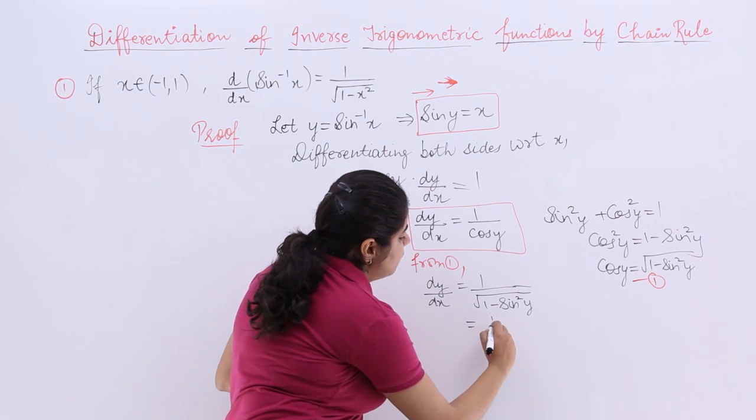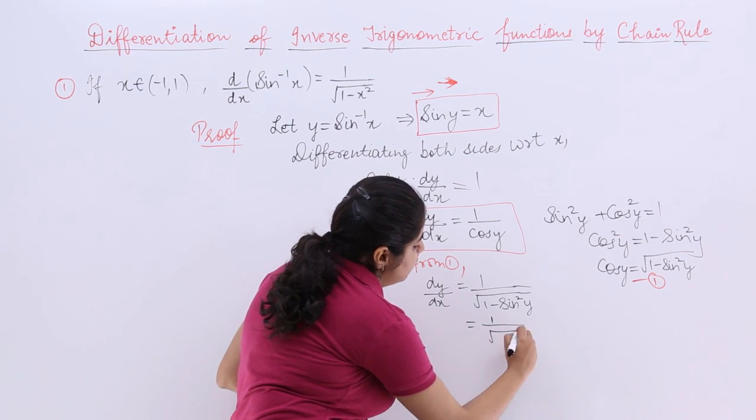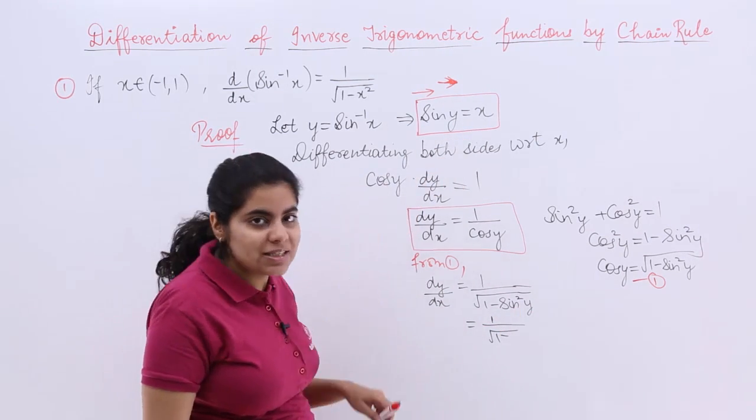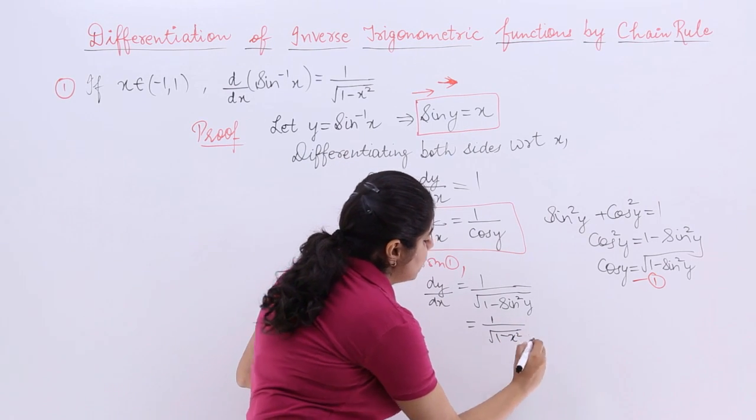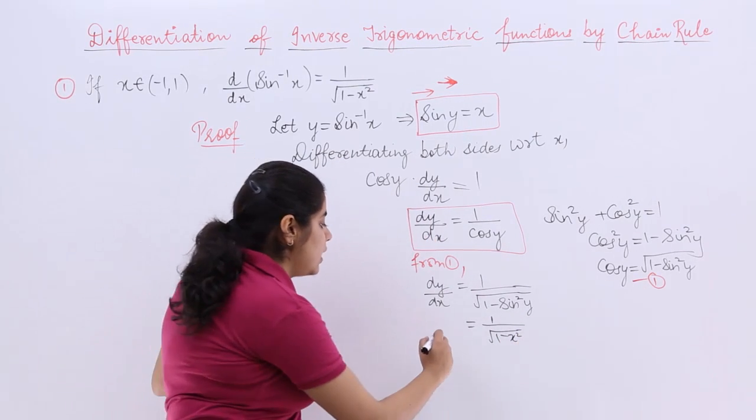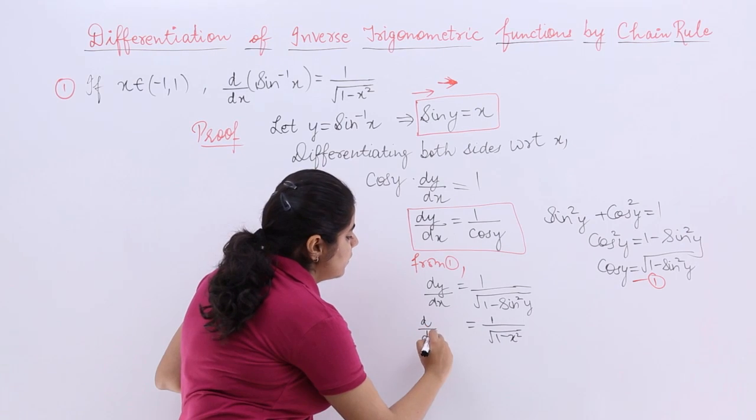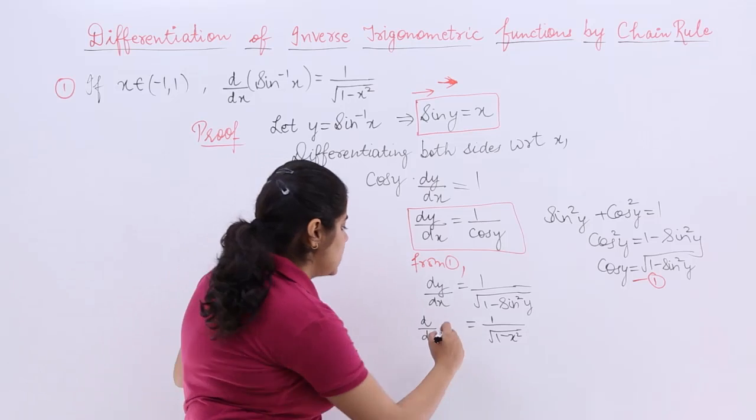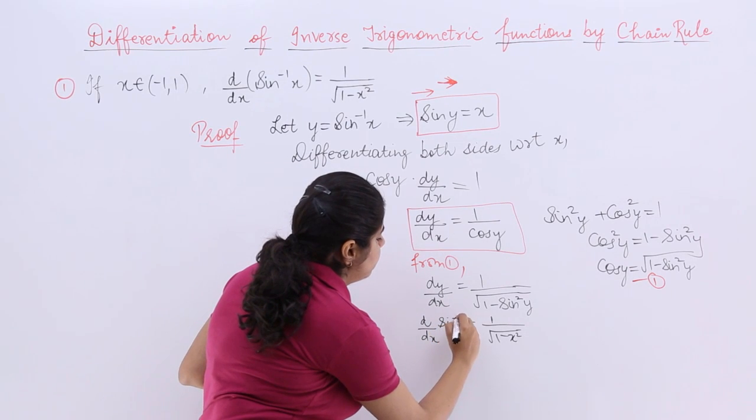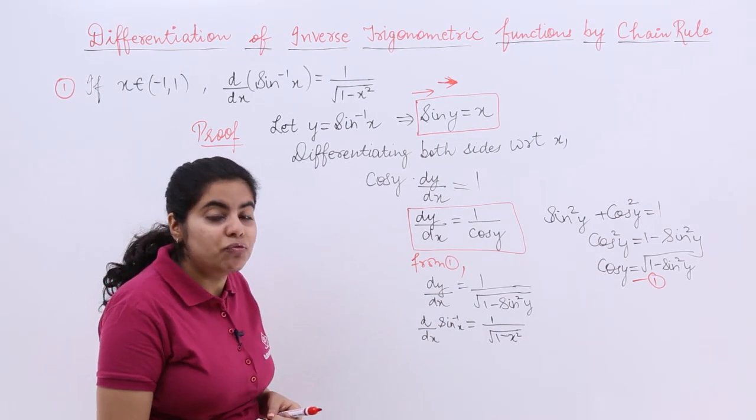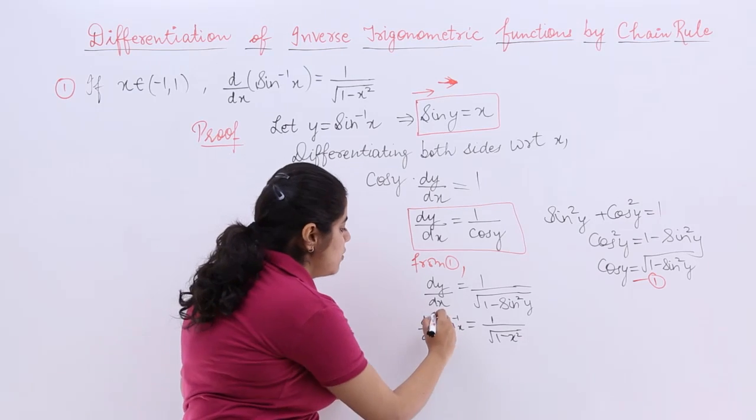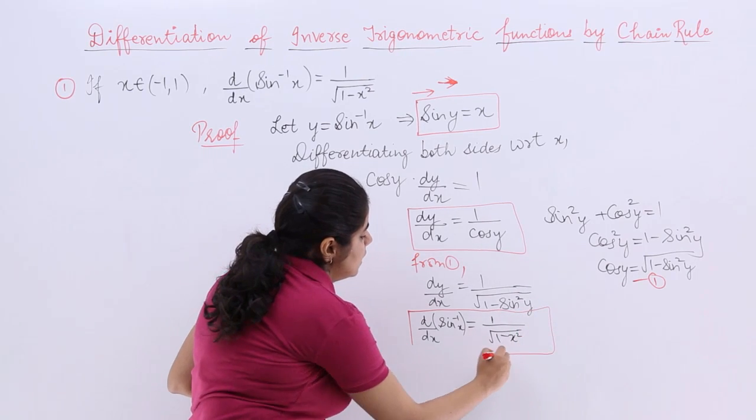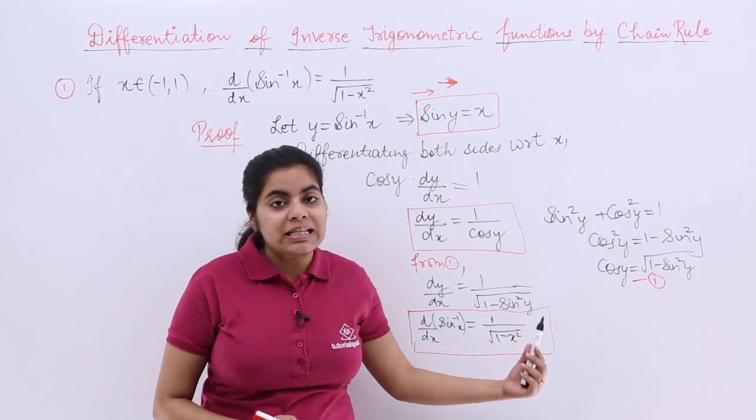So when sin y is x, I can say the answer is equal to 1 upon under root 1-sin y whole square, which is x square. And that is what we needed to prove: that d by dx of y, which is sin inverse x, is equal to 1 upon under root 1-x square. Since this is the final result, I will be enclosing this in a box and this is the proof.